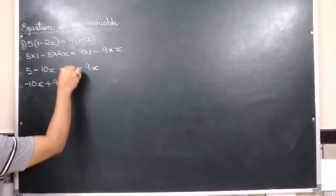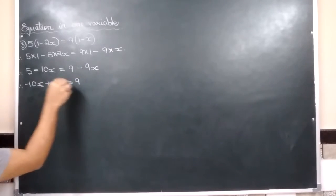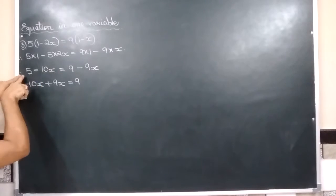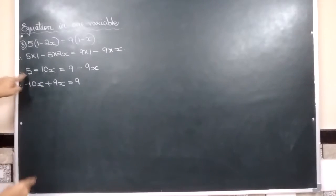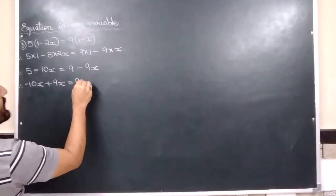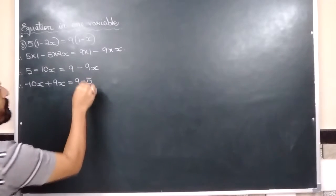Equal to sign brought down. 9 brought down. And 9 is 5 which is positive. So from positive 5 it will go to right to become negative 5.